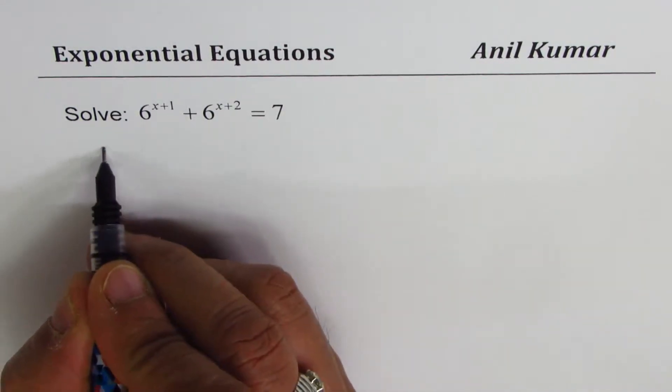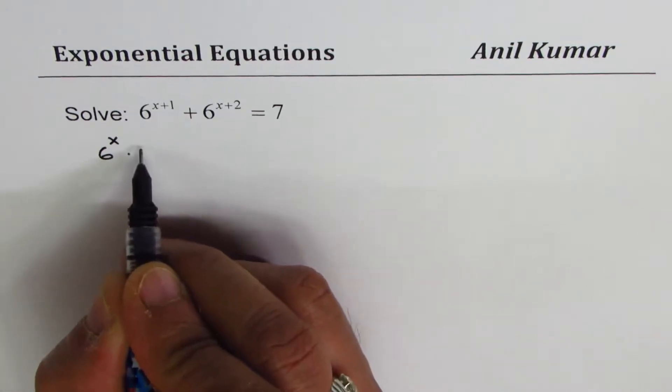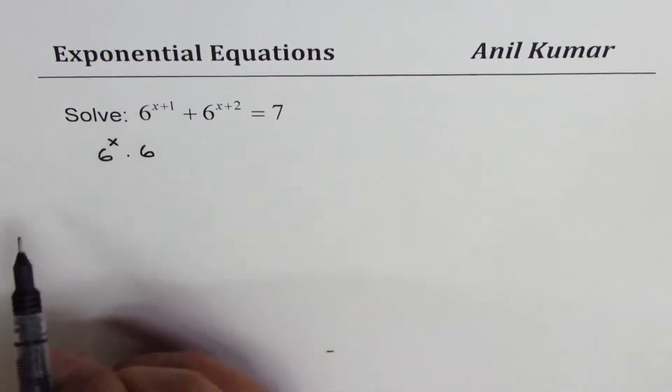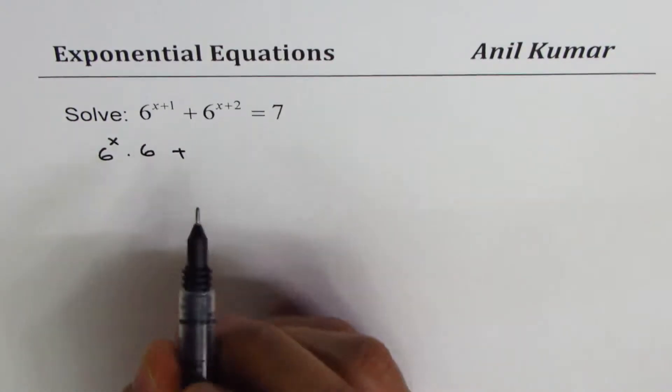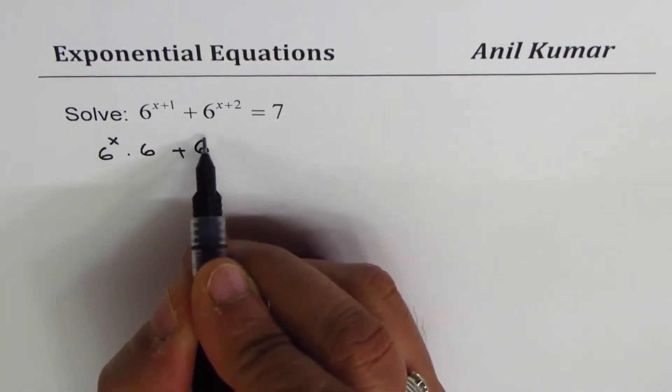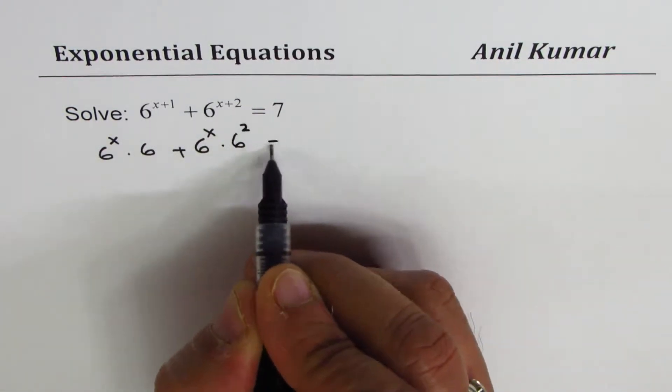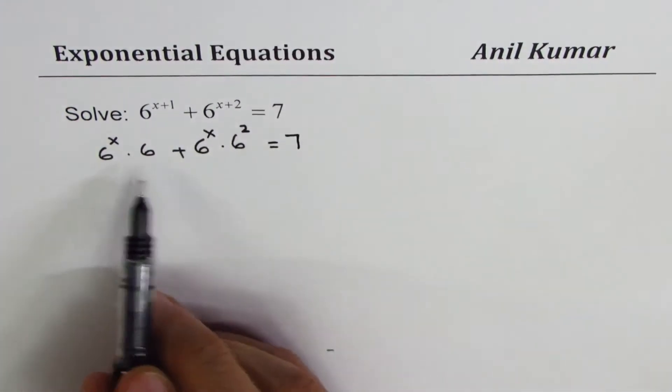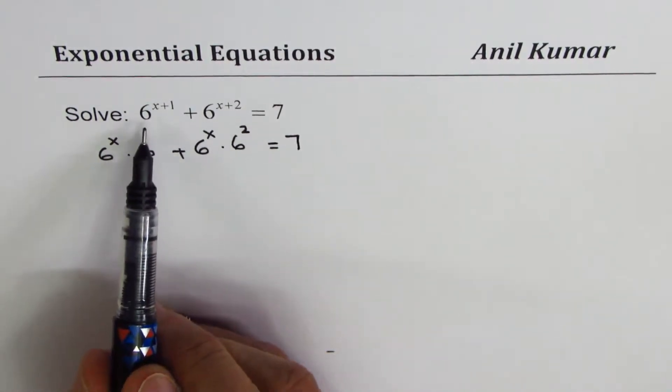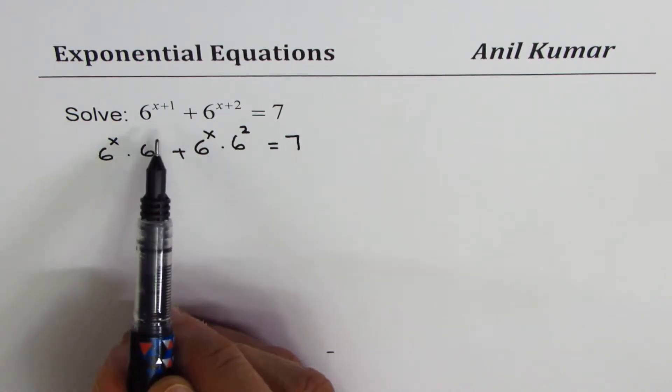We'll rewrite this equation as 6^x times 6, which equals 6^(x+1). Similarly, we can write 6^(x+2) as 6^x times 6^2, which equals 7. In the first step, we have written the exponential equation in product form.